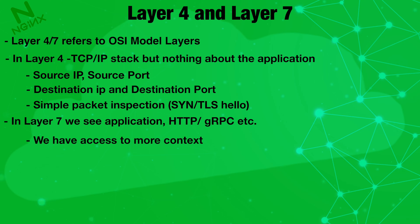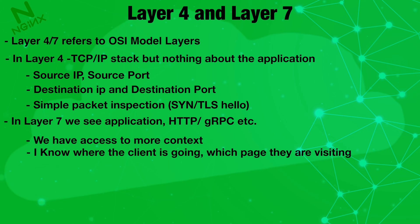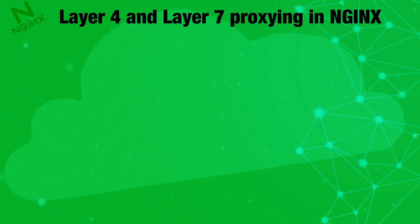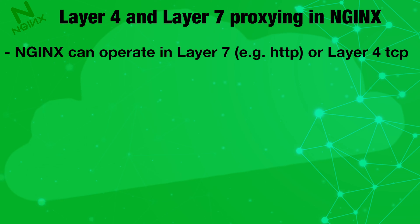At layer 7, the application layer, we know about HTTP or gRPC. We know what the request is about — whether it is a GET request, POST request, or a WebSocket connection. At this layer we have more knowledge; we know not just the IP but which URL or resource the client is trying to access. Decryption is also required at this layer.